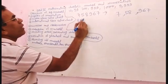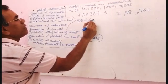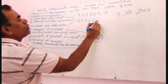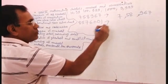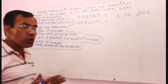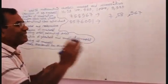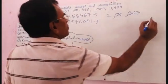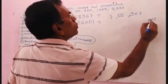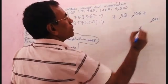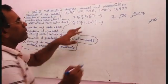For example, 8, 5, 7, 6, 0, 0, 1. First you write 3 digits from the right: 1, 0, 0. Then give a comma, then the next digits follow the same grouping pattern.